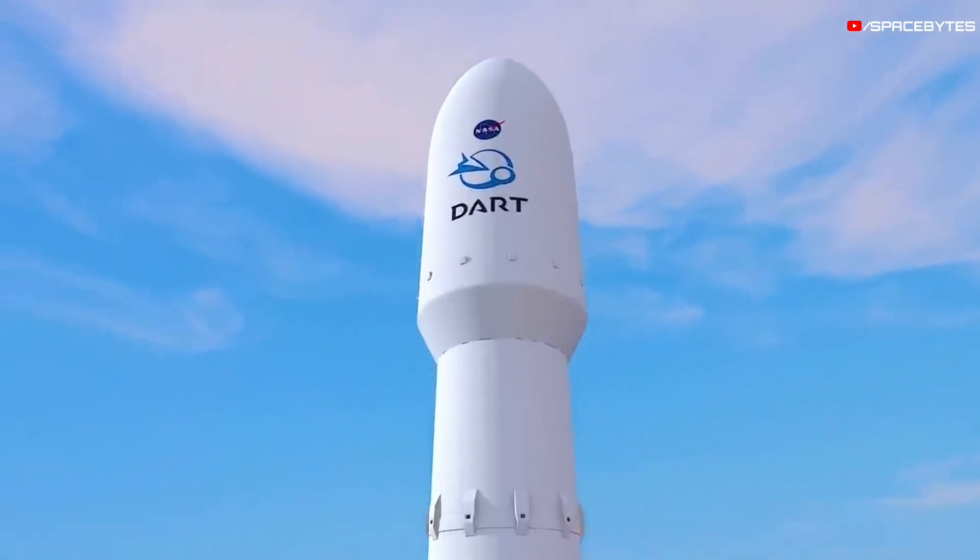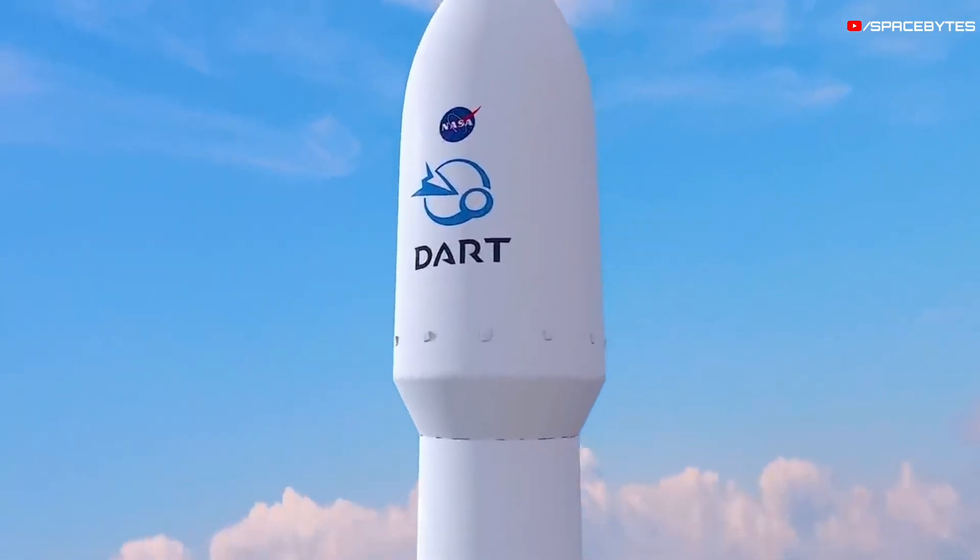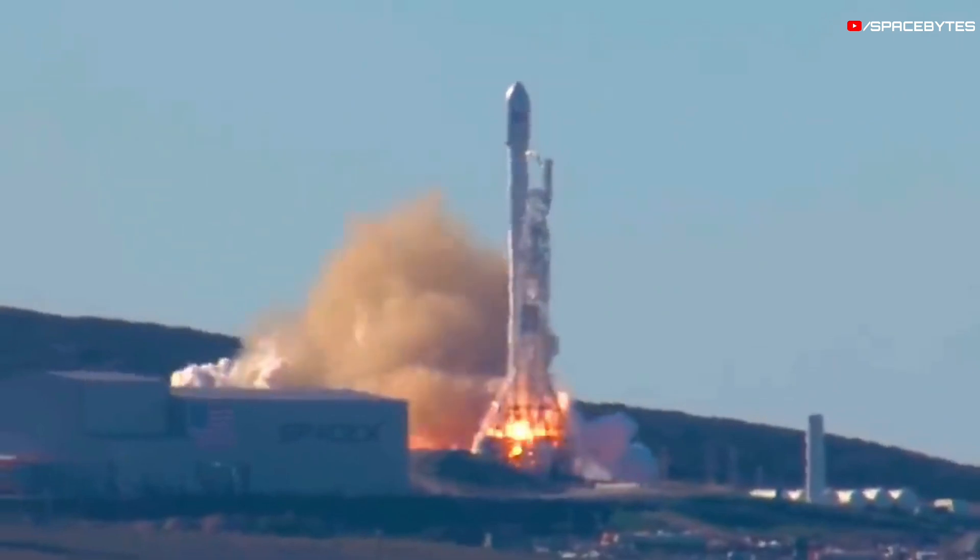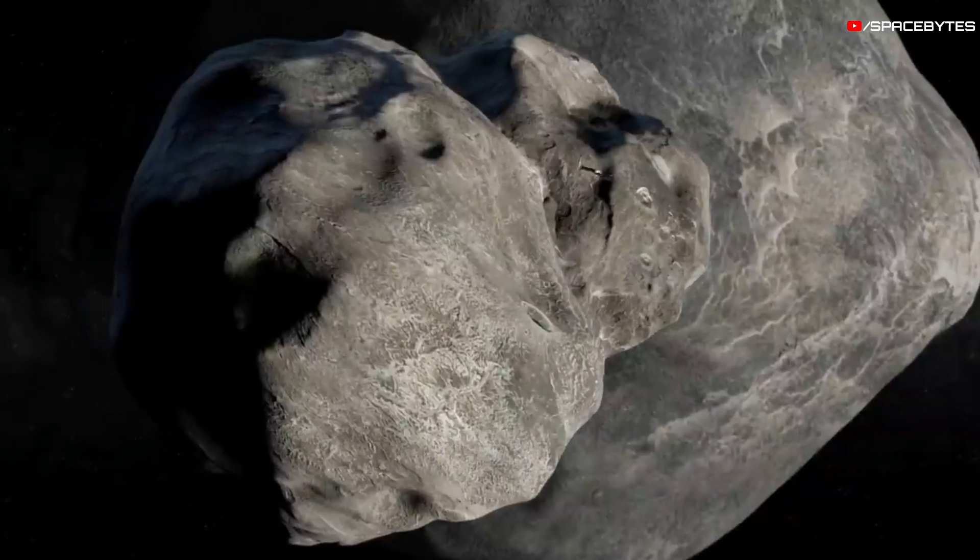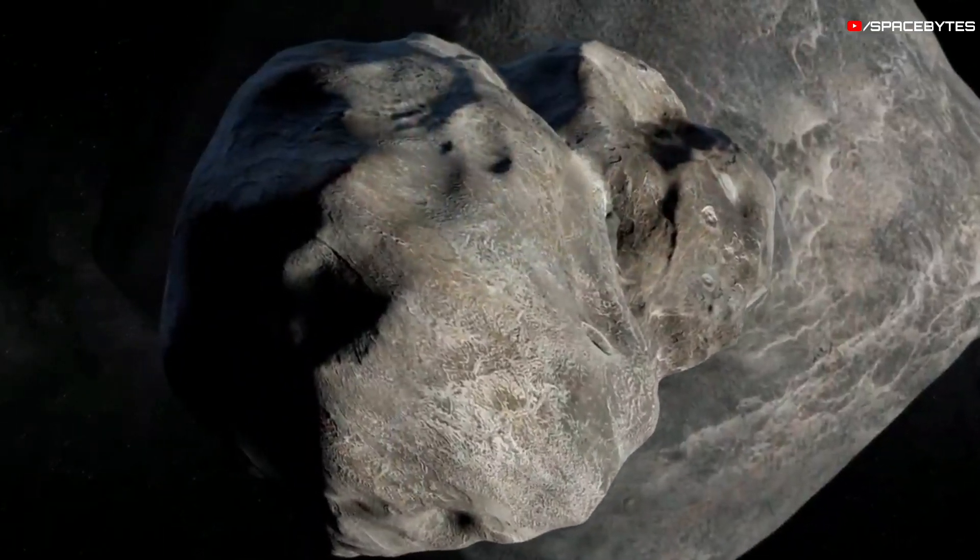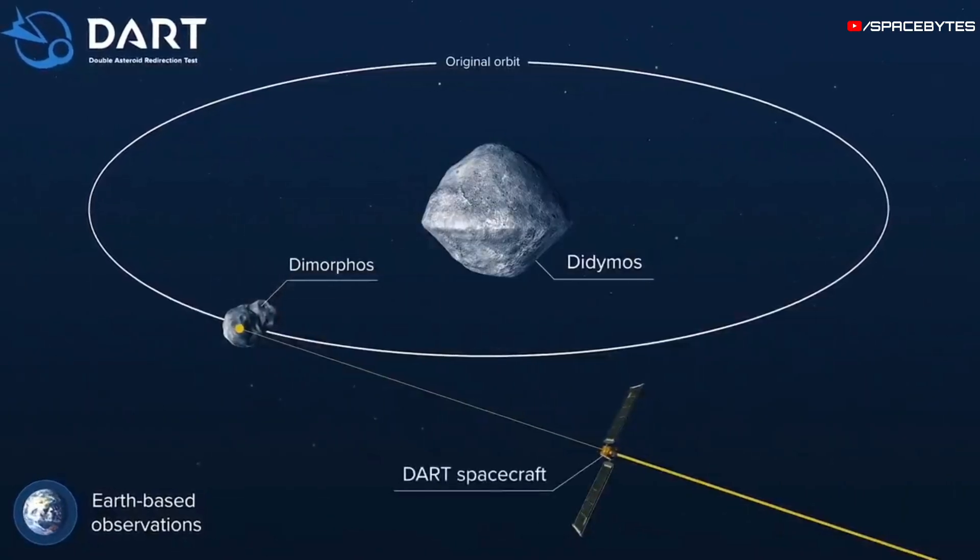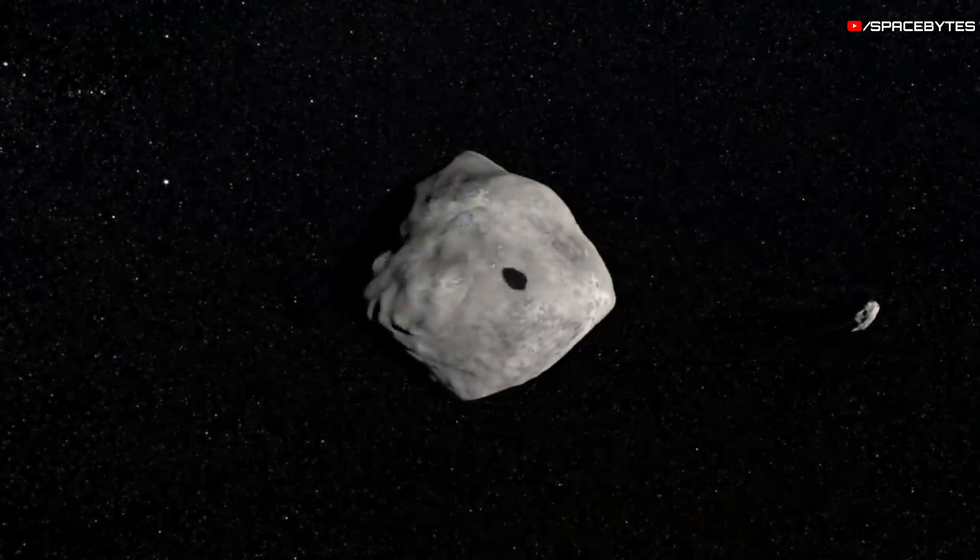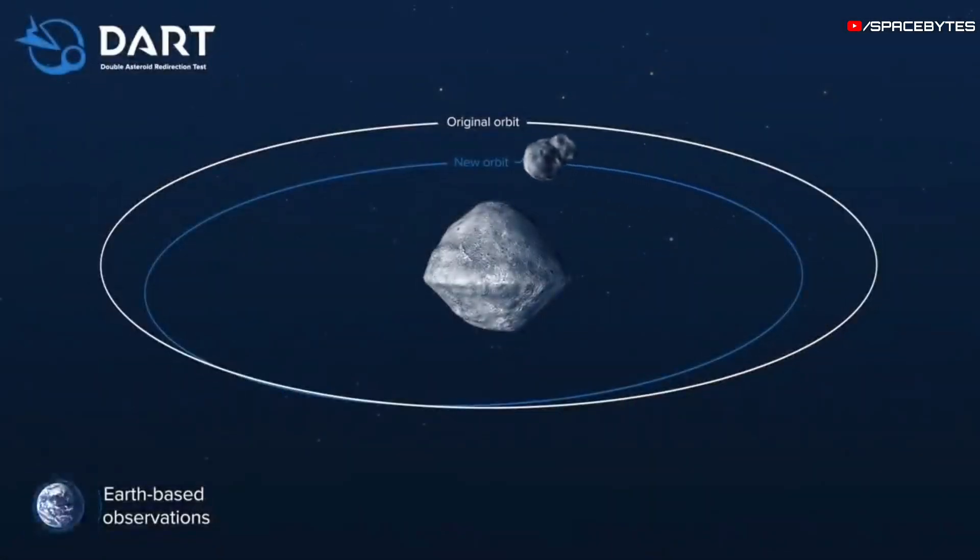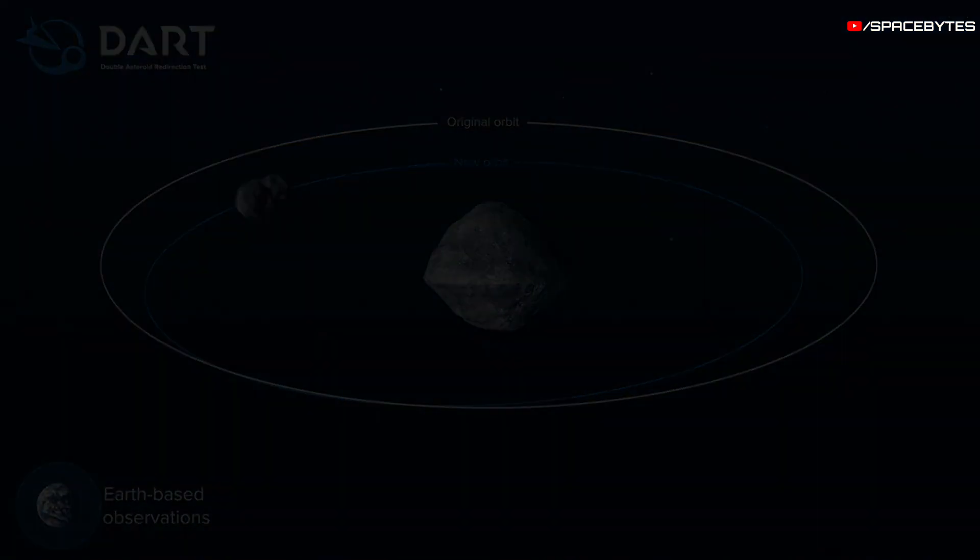Another approach is the DART mission, which stands for Double Asteroid Deflection Test. This involves launching a space probe at high speed at an asteroid, like Didymos, and deflecting it from its trajectory. If the mission succeeds, it could also be used to push dangerous asteroids away from Earth's orbit and safeguard the planet.